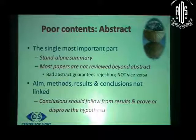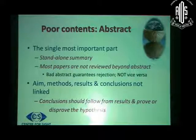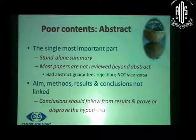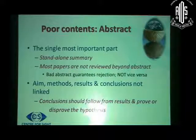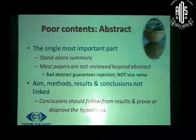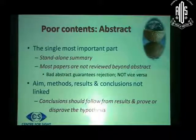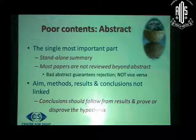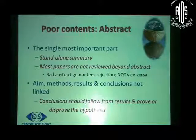To re-quote Einstein, if you ask why papers get rejected, you can simply say it is because they don't follow what has been advised so far. There can be a problem with the abstract — it is the standalone summary and the most important part. A lot of papers do not make it beyond the abstract in terms of the section editor or the reviewer. If you have a good abstract, it does not guarantee acceptance, but if you have a bad abstract, it definitely guarantees rejection.